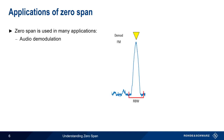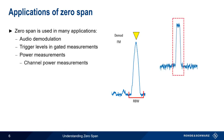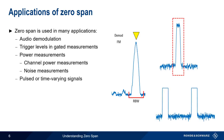There are many different applications for Zero-Span mode. Some of the more common uses are for audio demodulation, or deciding the proper trigger level for a gated measurement. Zero-Span is frequently used for measuring power, such as when making channel power measurements or measurements of wideband noise. And probably the most common application of Zero-Span mode is measuring the envelope of pulsed or other time-varying signals. Let's take a look at the use of Zero-Span for audio demodulation, channel power, and pulsed or time-varying signals.